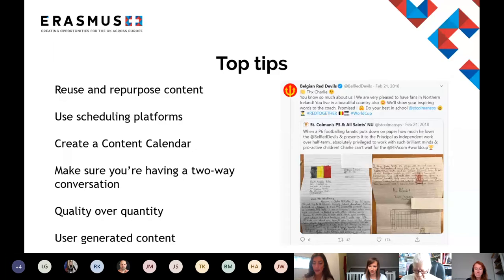Charlie, one of the pupils from St Colman's, became interested in Belgium and their national football team and decided to write them a letter. The school shared this on their social media, gaining a massive amount of likes. They tagged the Belgium team who responded to thank Charlie, and later sent a video of their coach with a personal message to him. The original post had a tagging element, an image element, a human interest angle, and used a hashtag and emojis — helping it reach a great amount of attention and engagement.